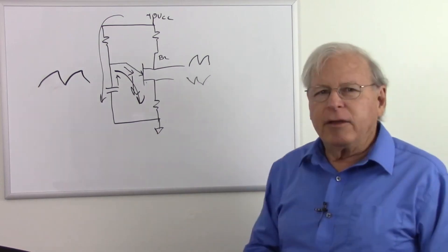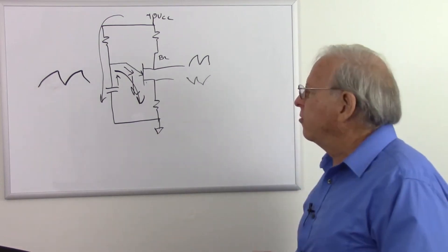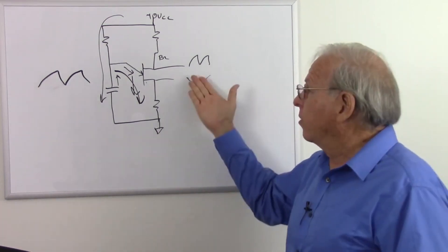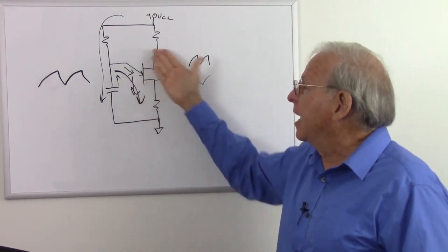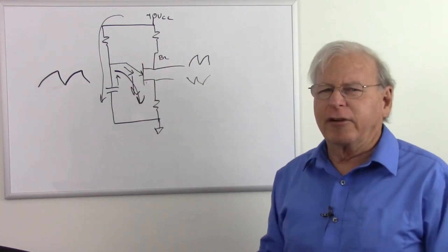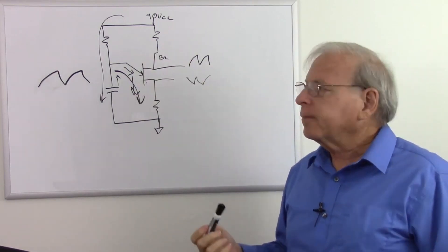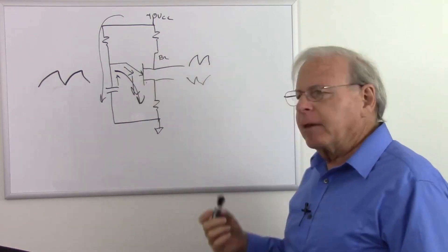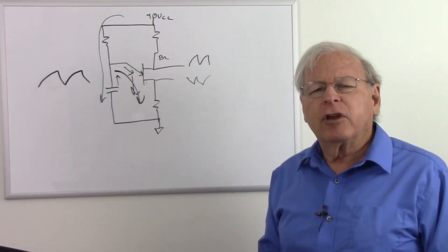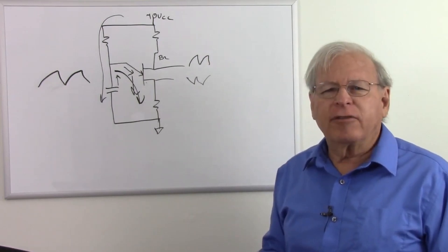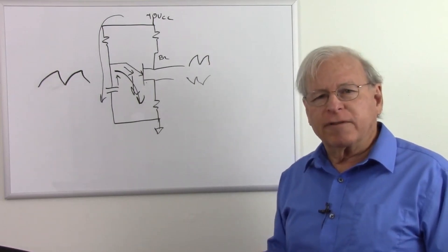So that's what a unijunction transistor does, and that's what they're used for — what's called a relaxation oscillator — and that's about all they're used for, except they might also be used to trigger a silicon-controlled rectifier.